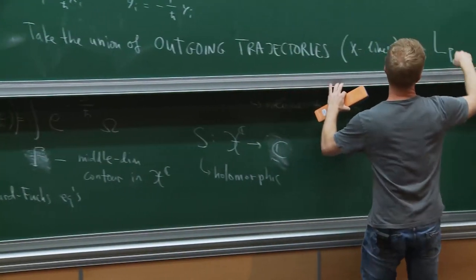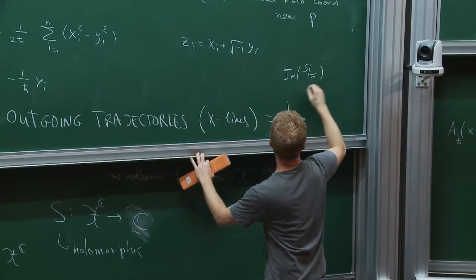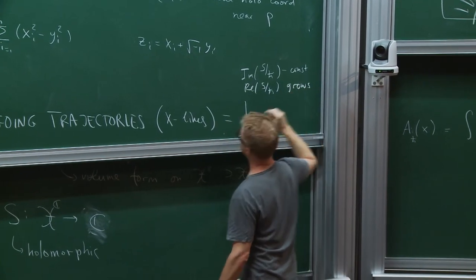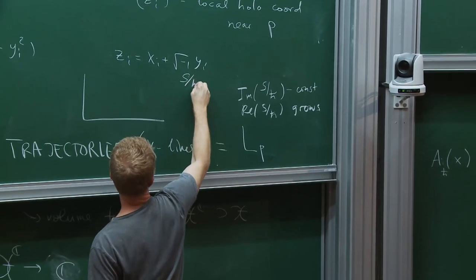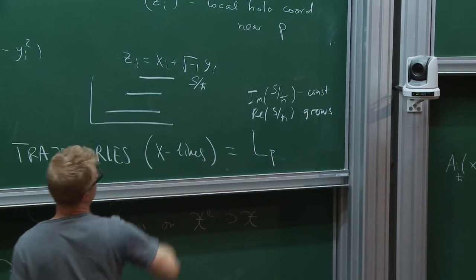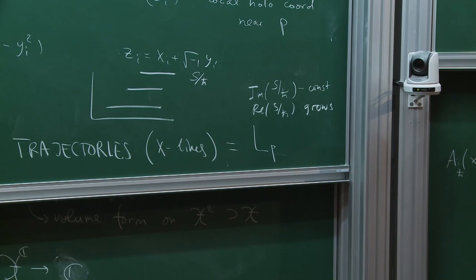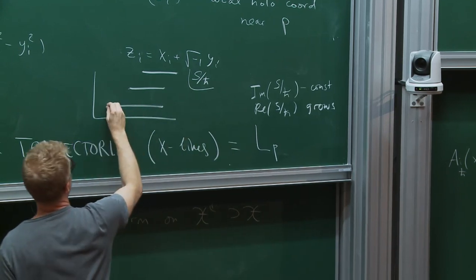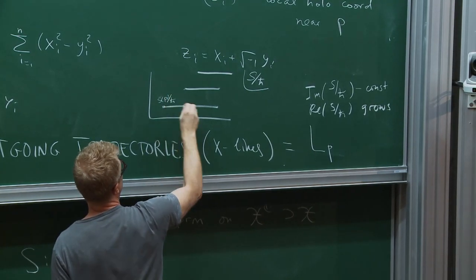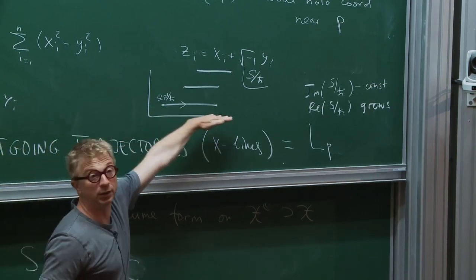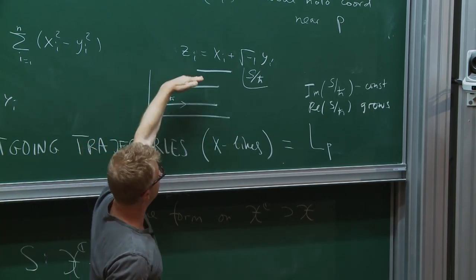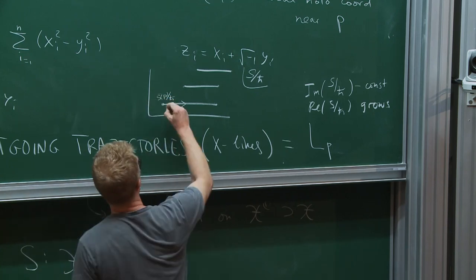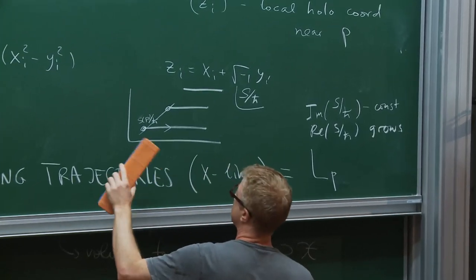Because this quantity is constant along the flow, on each Lefschetz thimble you have a real function which is constant — the imaginary part — and the real part grows. If you map all this into the S over H-bar plane, your Lefschetz thimbles map to half-lines: the imaginary part is constant, the real part grows, you start with the value at the critical point, and along the flow the real part only increases. Generic H-bar means that these lines do not intersect. When you start changing H-bar, basically changing the slope of these lines, at some point you may start hitting different critical points — that's when things become complicated.